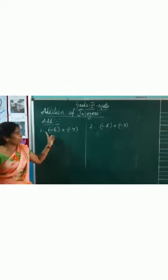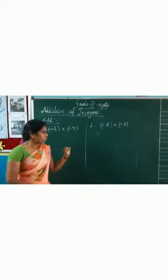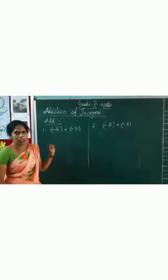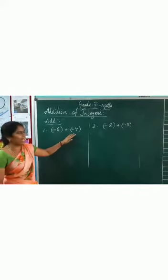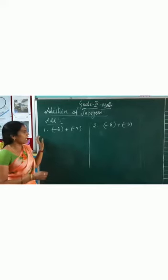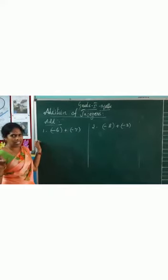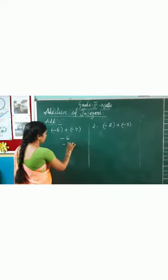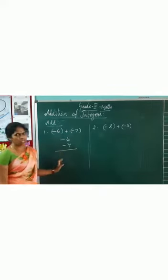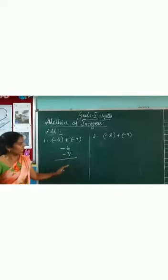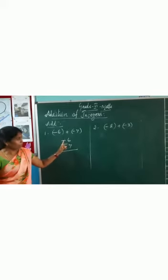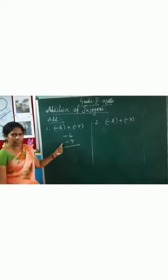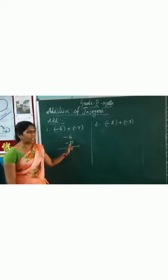You have to add the number minus 6 and minus 7. Both are negative numbers. Now let me teach you vertically — how to add vertically. Then after practicing the problems, we will do the direct horizontal method. Write minus 6 and below it write minus 7. Now before adding these integers, look at the symbol. Both numbers have the same symbol.